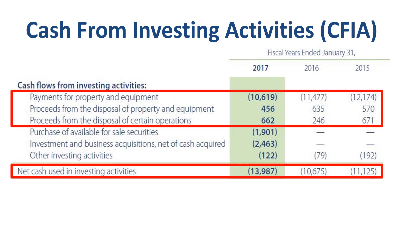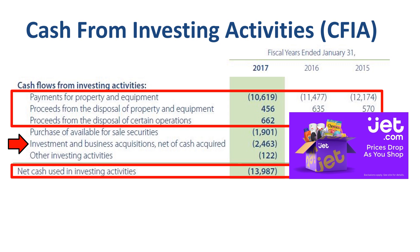FY17 also saw Walmart complete the acquisition of Jet.com, a US-based e-commerce company, for a total purchase price of $2.4 billion. The focus on e-commerce is therefore reflected twice in cash from investing activities — in both the capex line as well as the acquisitions line. In the annual report, two pages are dedicated to this topic, right after the letter to shareholders.